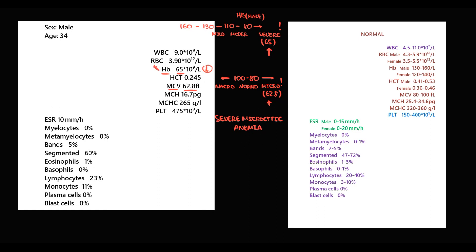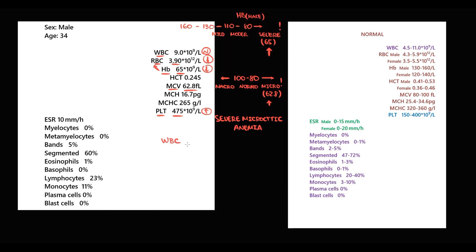In this case red blood cells are 3.9, which is lower than normal. The next value is platelets — 475, which is a little bit higher than normal. The next value is white blood cells; the count is 9, which is normal. White blood cells is a collective term that includes several types of cells, and we now need to check whether any subtype is elevated. White blood cells consist of three major groups: blast cells, lymphocytes, and myelocytes.